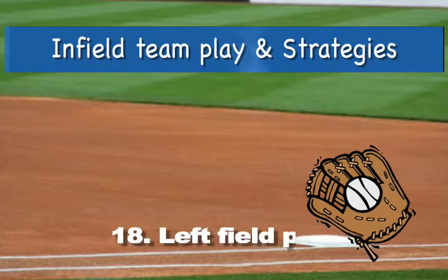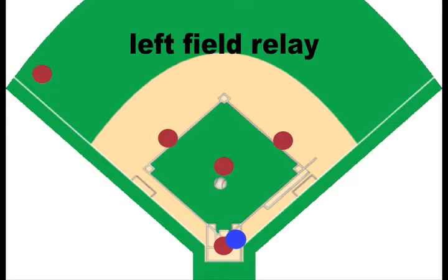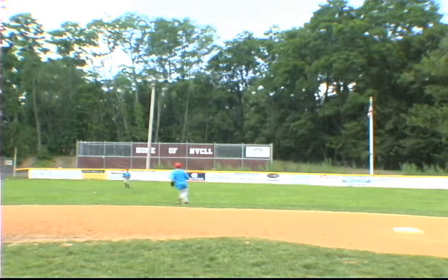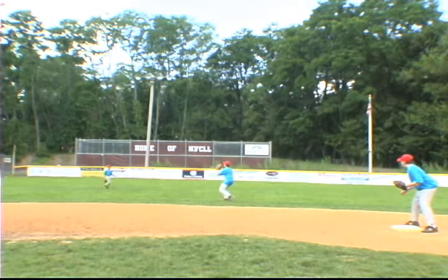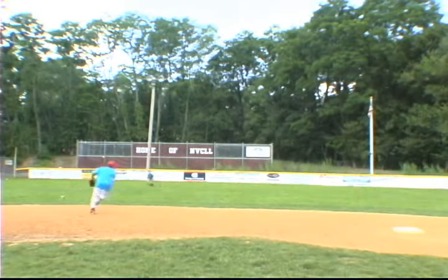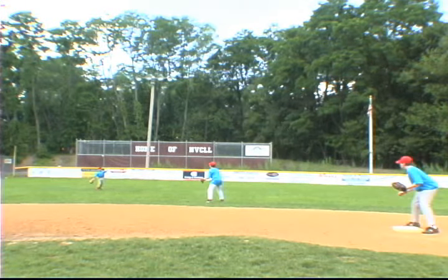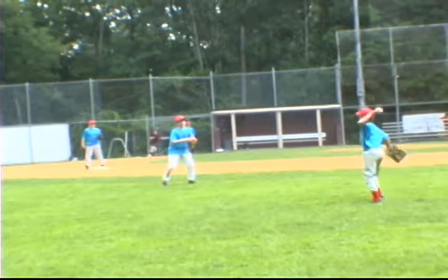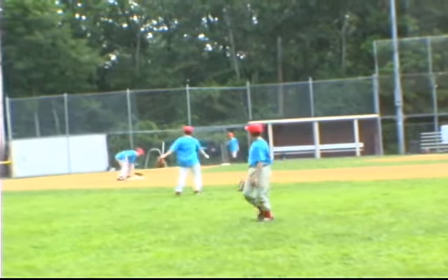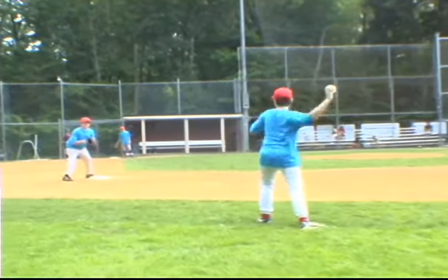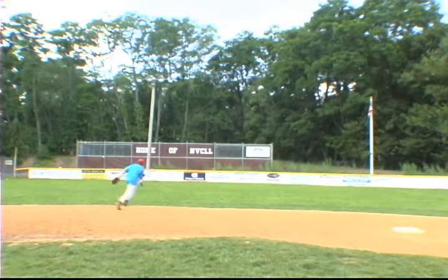Play eighteen: relay from shortstop to second. On a base hit to left, the shortstop goes out to short left field. Teams always need to practice the outfielder hitting the cutoff man. On a ball hit into left field, left center, or center field, the shortstop will run out to retrieve the throw. Ideally, the fielder should line himself in a straight line from the outfielder to second base — tough for young players, but can be done if practiced from the beginning to the end of the season. When the shortstop catches the baseball, he should turn to his glove side, which is the proper side to throw from.